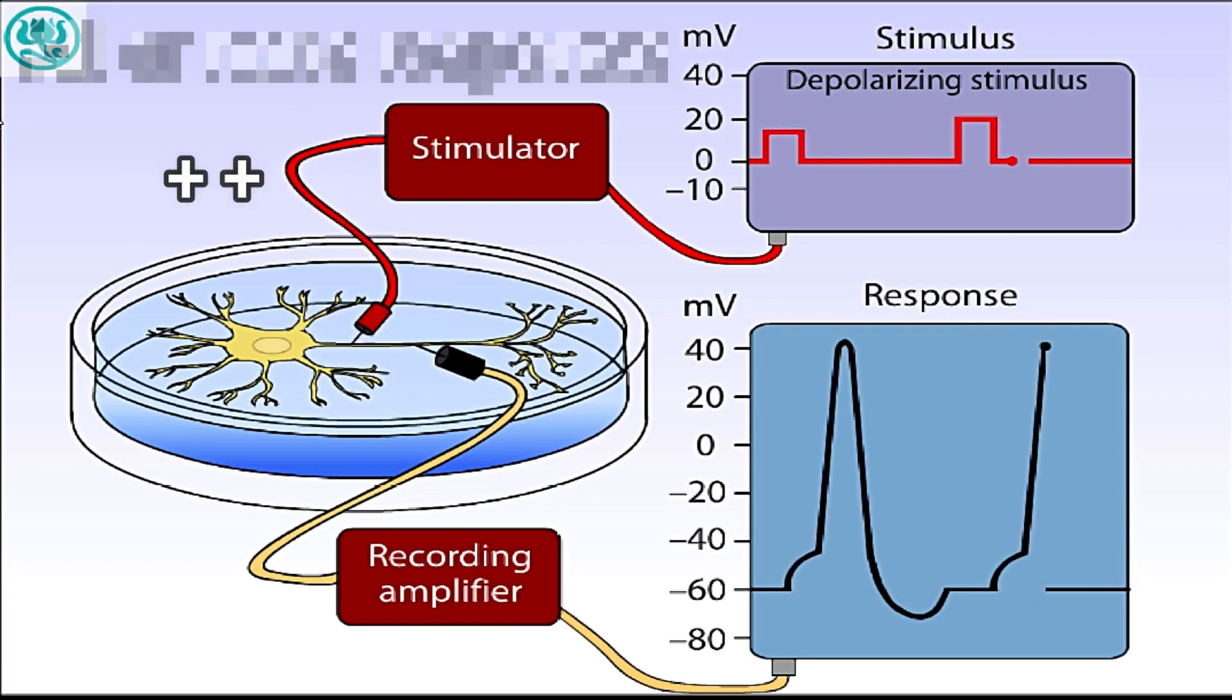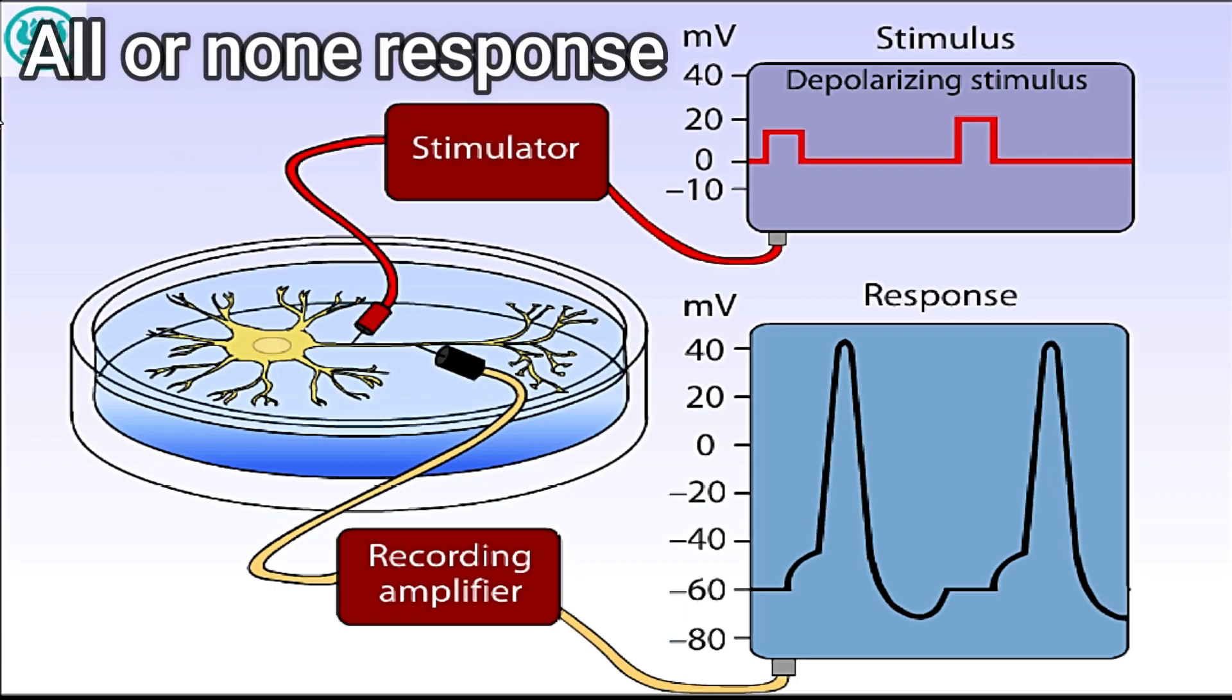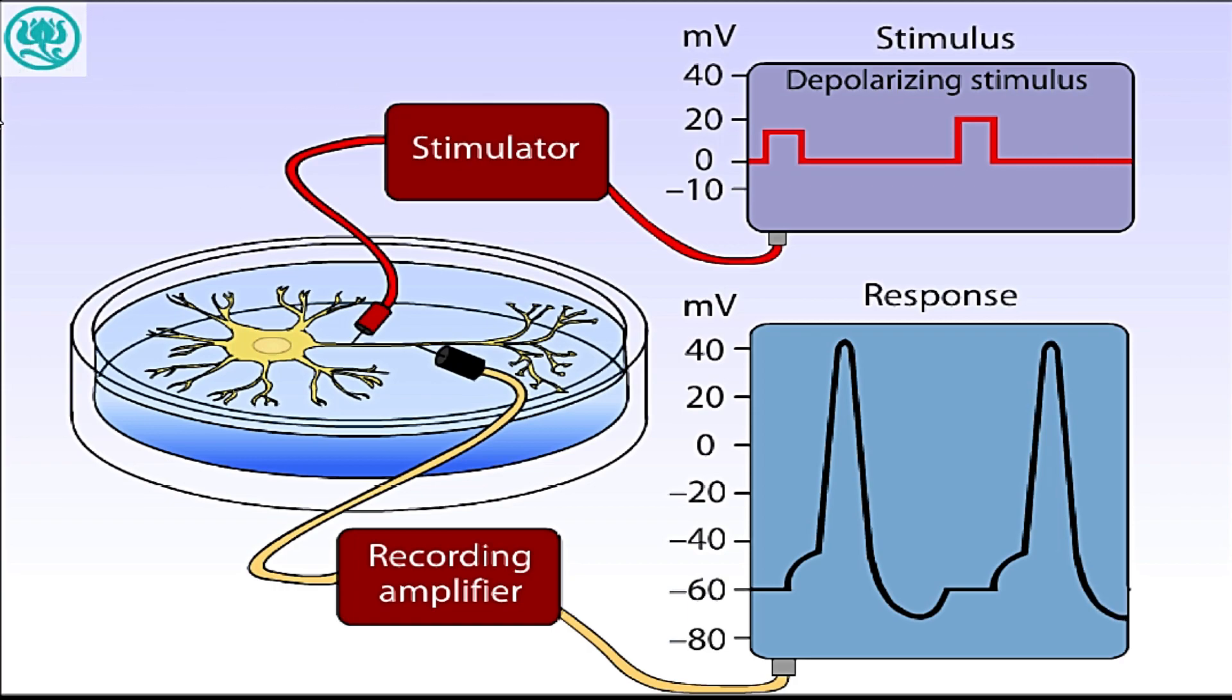Note that the action potential is an all-or-none event. Once generated, its amplitude does not vary as a function of the size of the preceding stimulus. Any suprathreshold stimulus will produce an action potential of similar amplitude and duration.